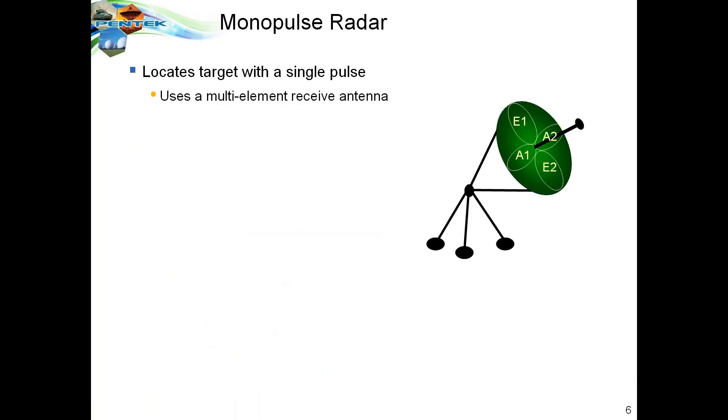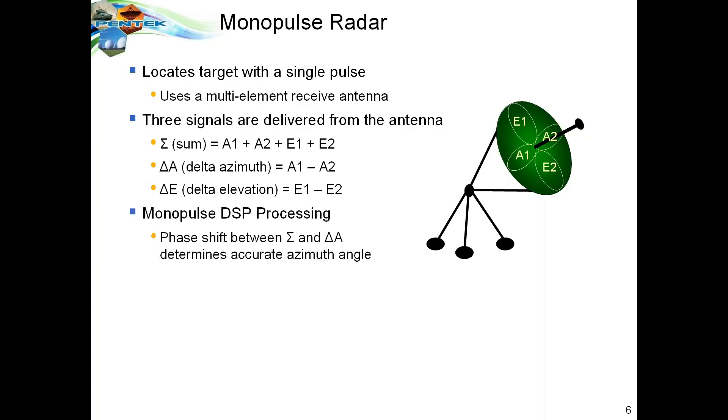The next radar we'll look at is called monopulse radar. It locates a target with a single radar pulse and it uses a multi-element receive antenna. Three signals are delivered from the antenna down to the radar processing system. The first is the sigma or sum signal that is the summation of all of the four different patches. The second is the delta A, which is the delta azimuth, which subtracts A1 minus A2 in signal. And the delta E is the delta elevation, which is E1 minus E2. Those three signals go down to a signal processing engine that calculates the phase shift between the main sigma or sum signal and the delta A signal. That allows you to determine a very accurate azimuth angle of the target. And the phase shift between the sum and the delta E signal determines a very accurate elevation angle.